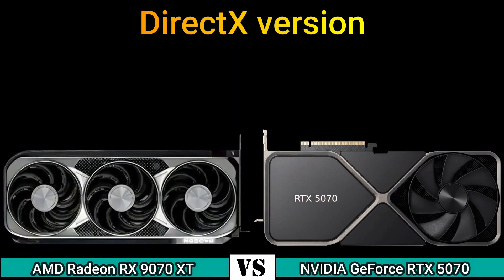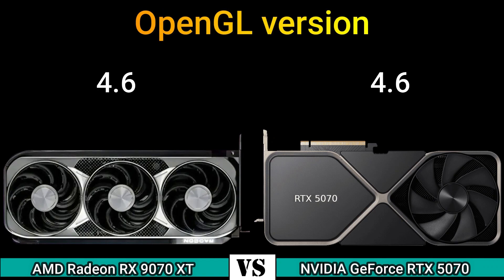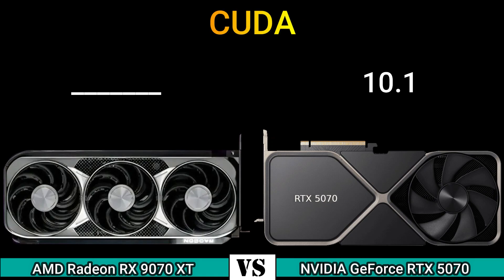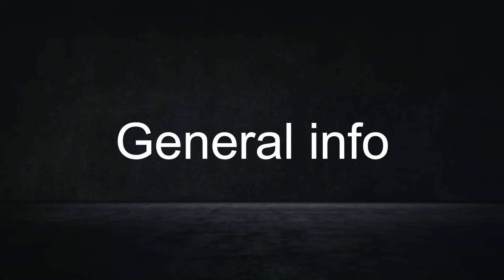Next, features. DirectX version: 12 Ultimate and 12 Ultimate (12.2). OpenGL version: 4.6. OpenCL version: 2.2 and 3.0. Vulkan: 1.3 and 1.3 / 1.4. CUDA: 10.1. Shader model: 6.8. Next, general information.